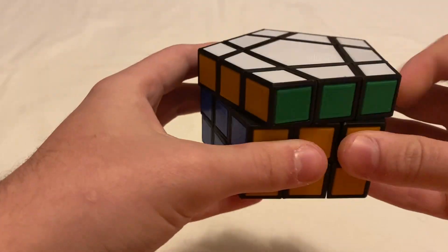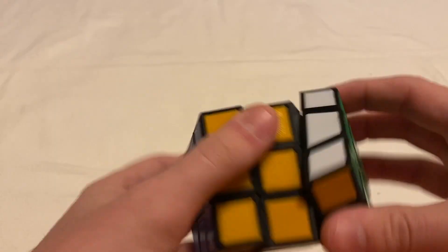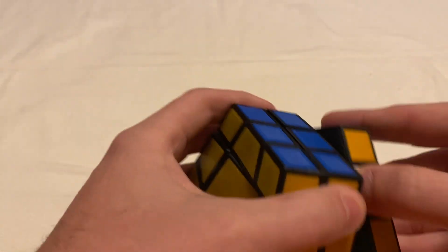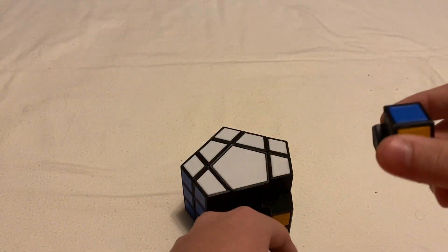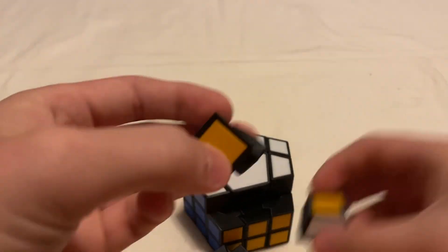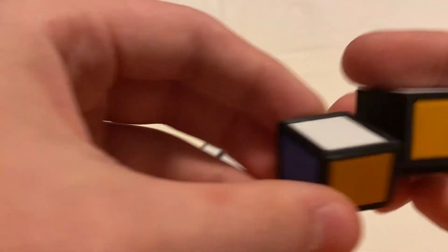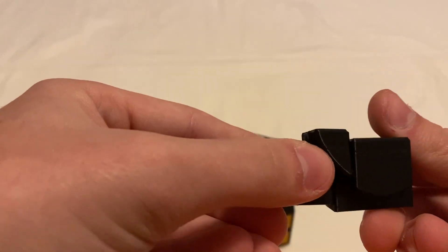So, this puzzle has a mechanism very similar to a 3x3. So, this is what a corner looks like. And this is an edge. They fit together like that.